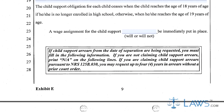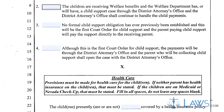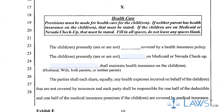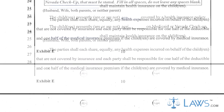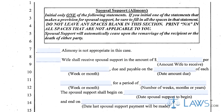Step 6: In Sections 11 and 12, detail assets and debts and how you would like for them to be divided. In Section 13, indicate your wishes regarding alimony payments.